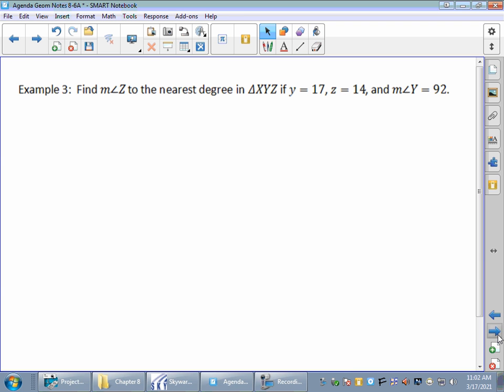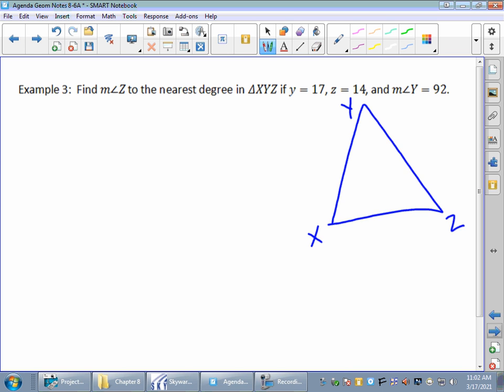Find the measure of angle Z. Notice we're finding an angle. That's different. To the nearest degree in triangle XYZ if - so I better draw this. Doesn't matter what it looks like. XYZ, which means we know where the opposite side is the small letter. It says Y is equal to 17. That's a small y, so this is 17. Side Z is equal to 14. The measure of angle Y is 92. And the question itself asked us to find the measure of angle Z. So I'm going to put an X in angle Z.